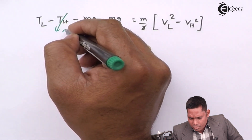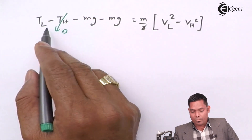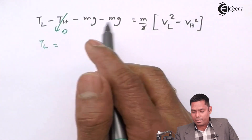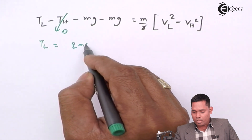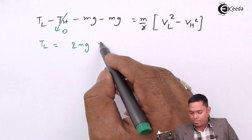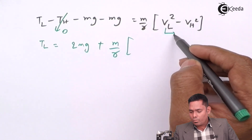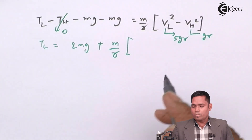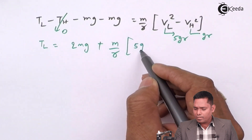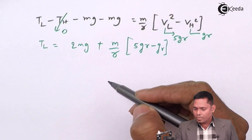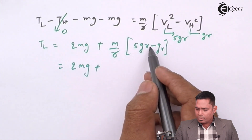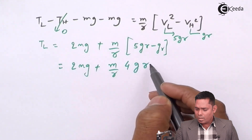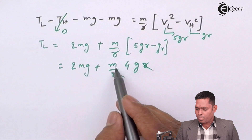Since T_H = 0 under critical conditions, T_L - 0 = T_L is the difference of tensions. Moving 2MG to the other side and substituting the critical velocities — V_L = √(5gR) and V_H = √(gR) — we get V_L² = 5gR and V_H² = gR. So M/R × (5gR - gR) = M/R × 4gR = 4MG. Therefore T_L = 2MG + 4MG = 6MG.